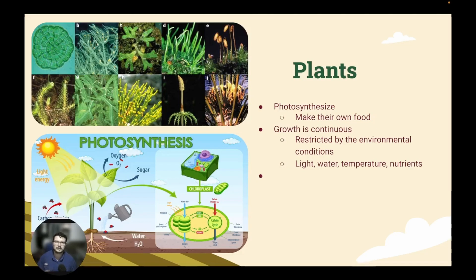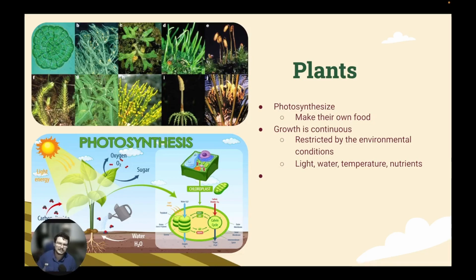Another characteristic of plants is the fact that their growth is continuous. So they are primarily restricted by their environmental conditions — things like the light, the water, the nutrients, and the temperature around them in the world.